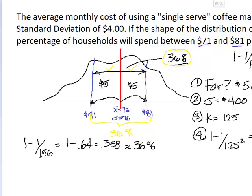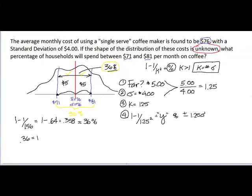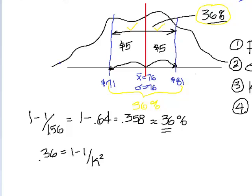Real quick, how can I be sure that I'm right? This should solve backwards as well, which would tell me that 0.36 equals 1 minus 1 over K squared. And because I've already said over here that K equals 1.25, what I need to do is I need to prove that if I substitute this value here, that this K solves for 1.25. So I'm going to do algebra, which is probably my least favorite thing in the world.